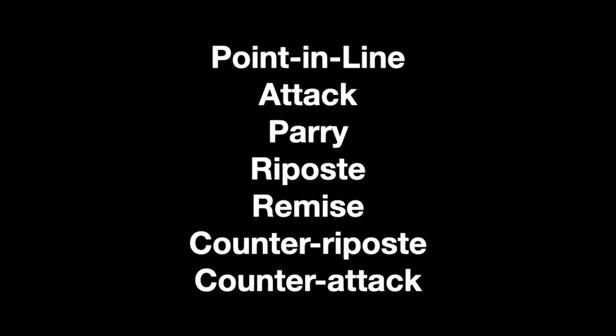Reminder number three: if there is only one hit, we don't have any rules to apply — there's nothing to figure out. In an actual duel, if you stab your opponent and he doesn't stab you, it doesn't matter how you did it. He's bleeding and you're not. But we don't fence with sharp swords, so we need to understand what would have happened if they had been sharp. Here are the seven basic actions you must know: the point in line, the attack, the parry, the riposte, the remise, the counter-riposte, and the counter-attack.